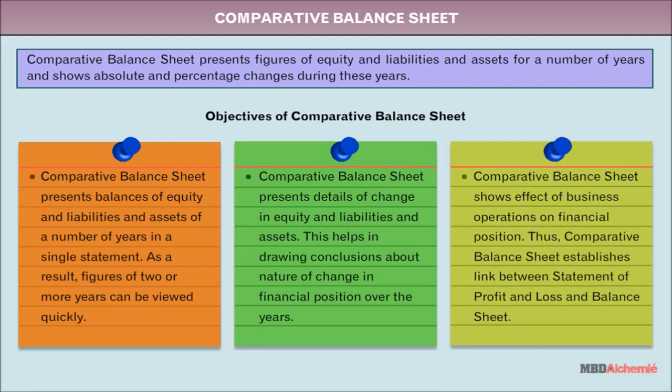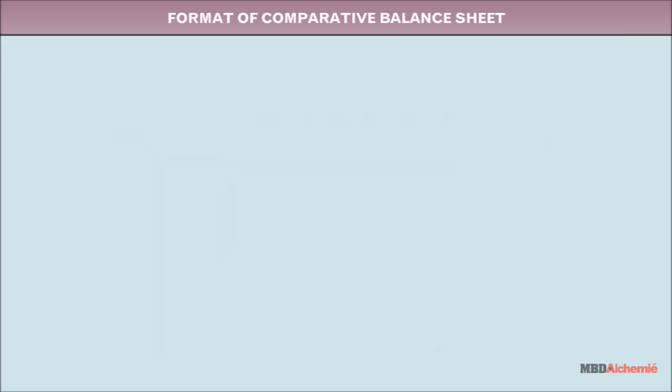The comparative balance sheet shows the effect of business operations on financial position. Thus, it establishes a link between the statement of profit and loss and the balance sheet.